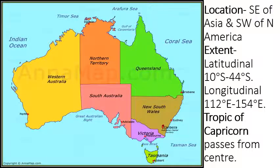Now, the location of Australia. Australia is located to the southeast of Asia and to the southwest of North America.